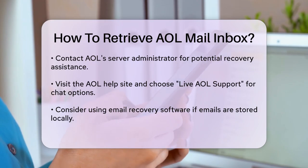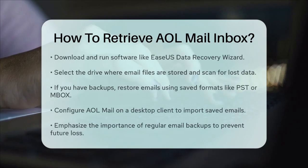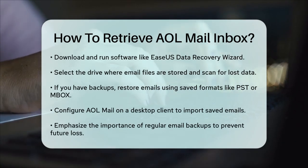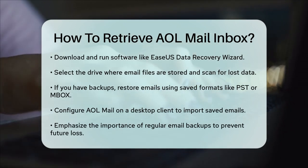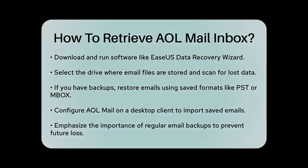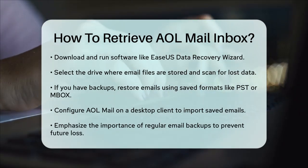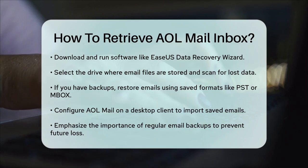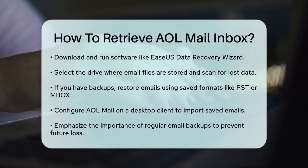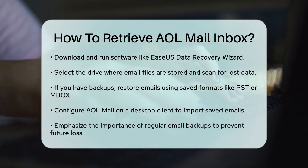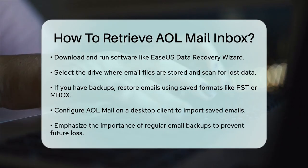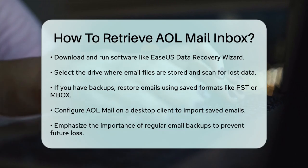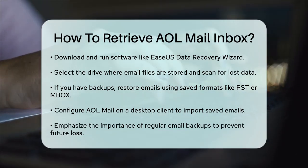You can then import these files back into Outlook and use them again. If you've taken a backup of your AOL emails, you can also restore them using this backup. You can save your AOL emails to your computer in formats like PST, MSG, EML, or Mbox, and use these backups to restore your emails. For example, you can configure AOL mail on a desktop email client like MS Outlook or Mozilla Thunderbird, and then import the saved emails into this client. Remember, having a regular backup of your emails is the best way to ensure you can recover them if they get deleted accidentally. So make sure to save your important emails regularly to avoid any future headaches.